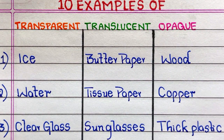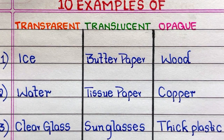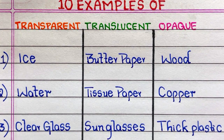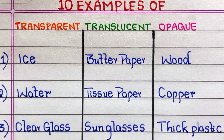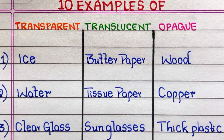First example of a transparent object is ice, second water, third clear glass. First example of a translucent object is butter paper, second tissue paper, third sunglasses.